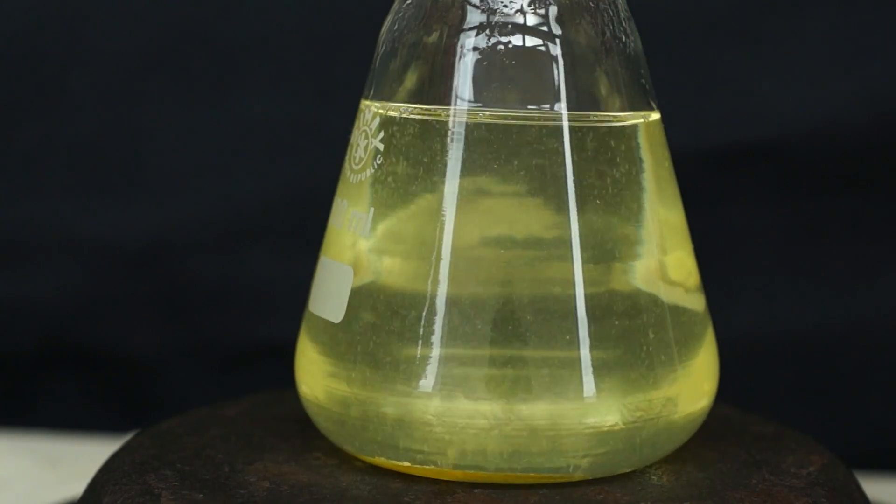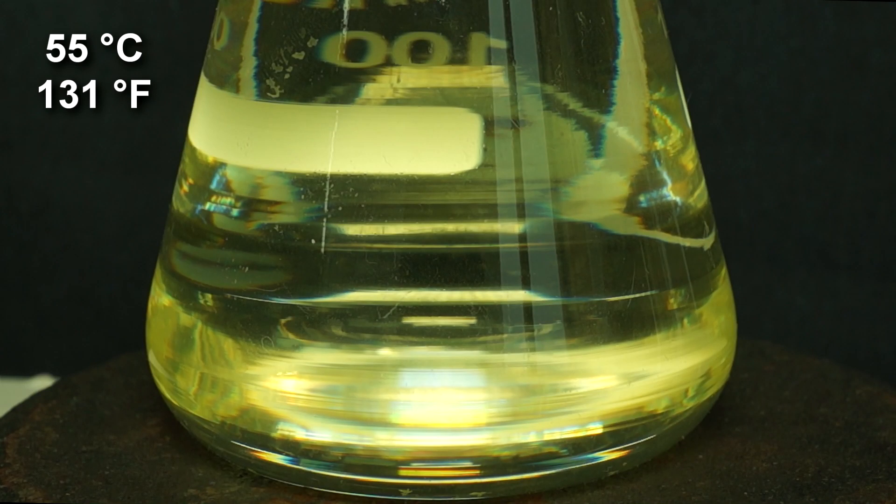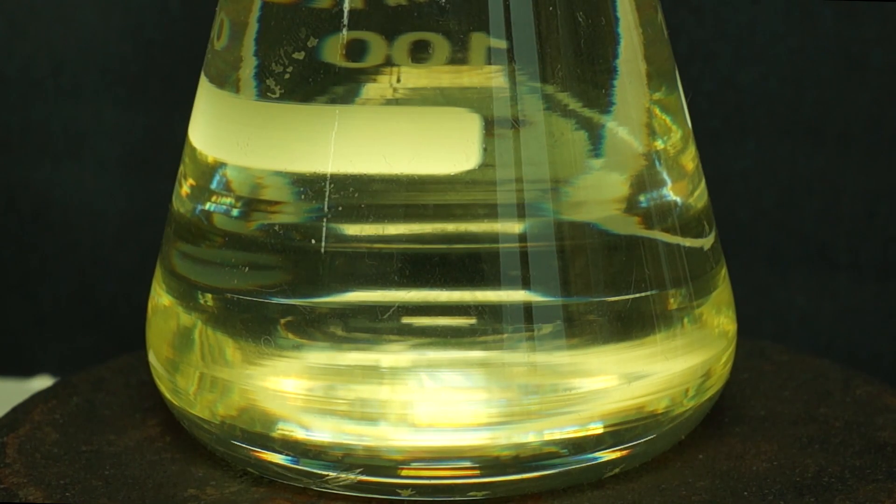After the mixture reaches 95 degrees Celsius, all the sulfur will completely dissolve in toluene. Upon reaching 55 degrees Celsius, yellow needle crystals of sulfur will begin to precipitate in the flask.